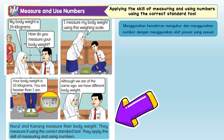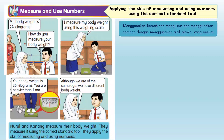From the conversation, we know that Neural and Kana measure their body weight. They measure it using a correct standard tool. They apply the skill of measuring and using numbers.